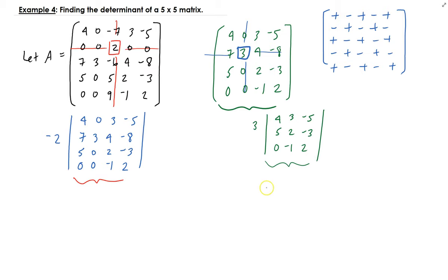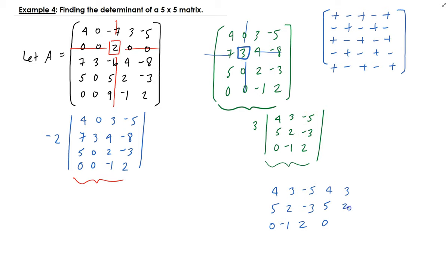For this three by three matrix we can use the diagonal line approach. We take the first column and place it to the right, then the second column, and draw the diagonals. Our matrix is four, three, negative five, five, two, minus three, zero, minus one, two.